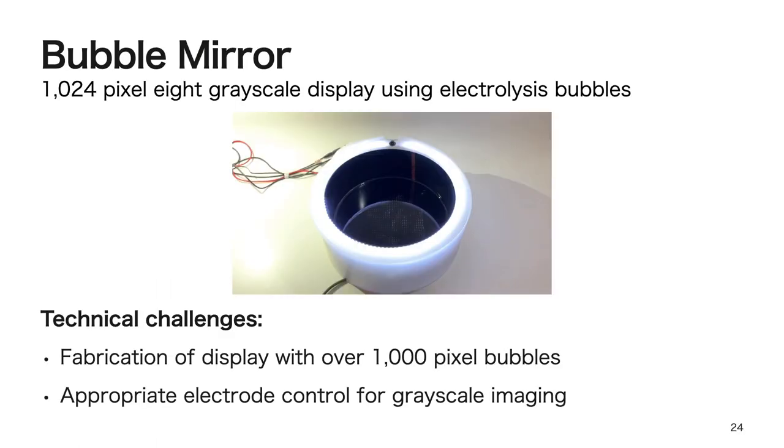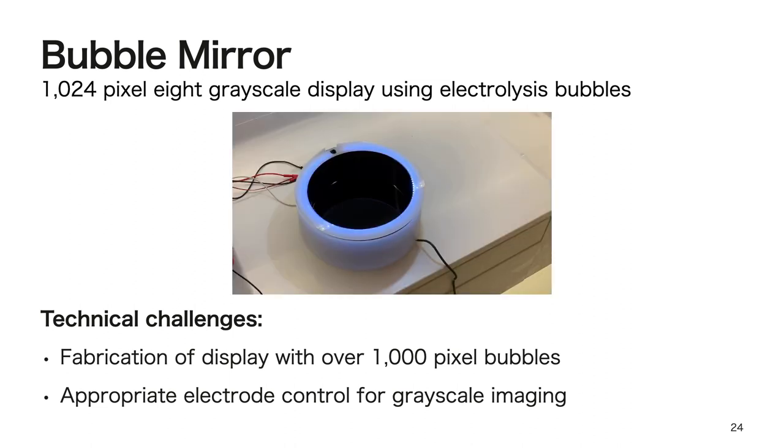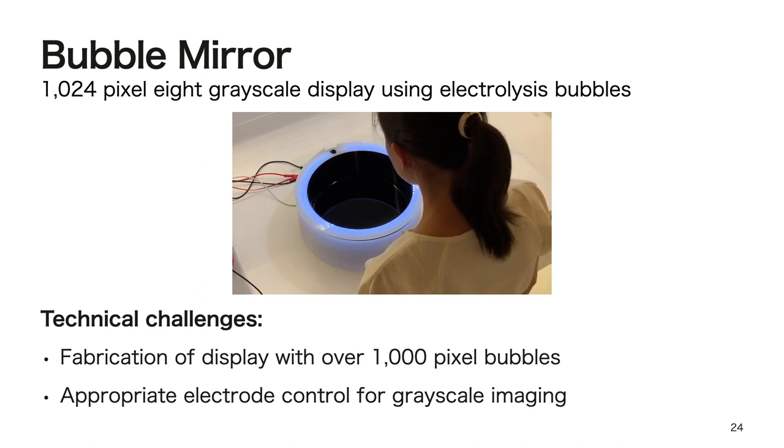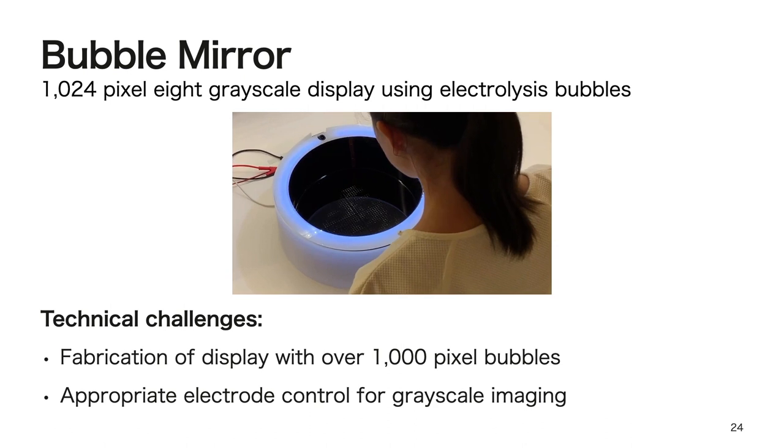Next, I will explain the implementation of Bubble Mirror. Bubble Mirror displays a facial image on the water surface when the person looks into the system. In Bubble Mirror, we address several technical challenges, such as the realization of a display with over 1000 pixel bubbles and the appropriate electrode control for grayscale imaging.